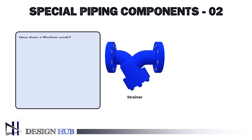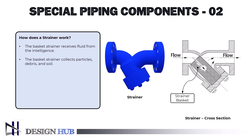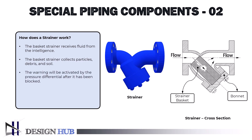Let's see how a strainer works. The following fundamental procedures are part of the pipe strainer's working theory. The basket strainer receives fluid from the inlet. The basket strainer collects particles, debris, and soil. The warning will be activated by the pressure differential after it has been blocked. The pipe mechanism can be turned off or the flow can be sent to the next basket strainer, depending on the strainer's design. The basic components of the strainer valve are shown in the drawing.